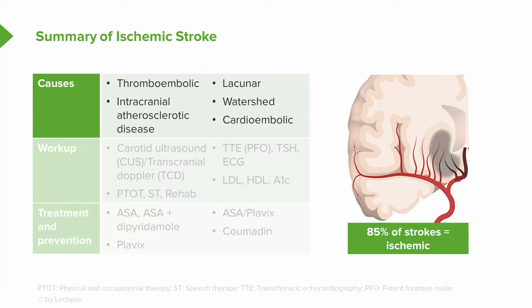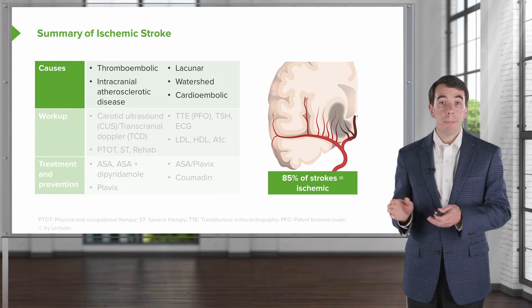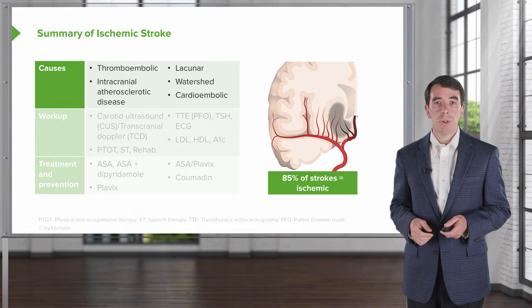When I think about ischemic stroke, I think of five major causes. We can see ischemia — a reduction in blood flow to a part of the brain — from thromboembolism, intracranial atherosclerosis, lacunar infarcts, watershed ischemia, and embolism or cardioembolism. Those five causes are what we evaluate in patients or clinical vignettes when evaluating for an ischemic stroke.